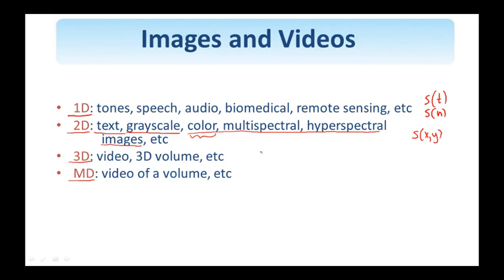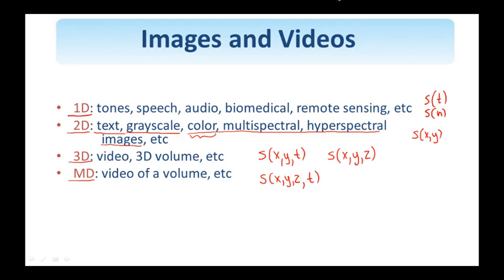Video is a 3D signal with two spatial and one temporal coordinate, while a 3D volume has three spatial coordinates X, Y, Z. As an example of a four-dimensional signal, I can look at a volume — an X, Y, Z signal that changes over time, so time is the fourth independent variable. Some of the tools we use to describe signals carry over from 1D to 2D to multi-dimensional; it's a straightforward extension — one just adds one more variable and everything remains the same in some sense.